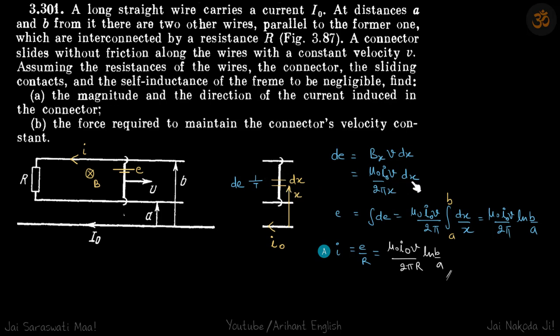Integrate it with limits from A to B to get our EMF and divide that by R to get our current.